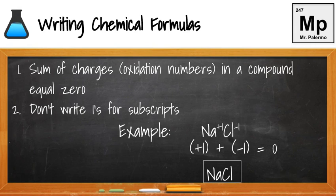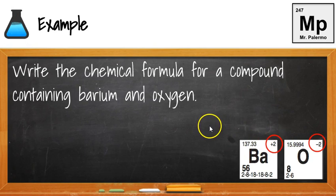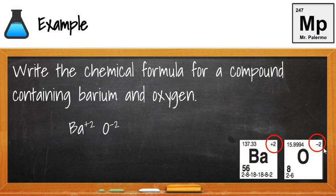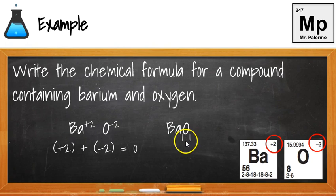Let's write the chemical formula for a compound containing barium and oxygen. I write the two chemical symbols next to each other, positive one first. Barium forms a plus 2 ion; oxygen forms a negative 2 ion. Plus 2 and minus 2 equals zero — also neutral. So I only need one Ba and one O. I don't write Ba1O1 — we don't write ones — so I just write BaO for barium oxide.